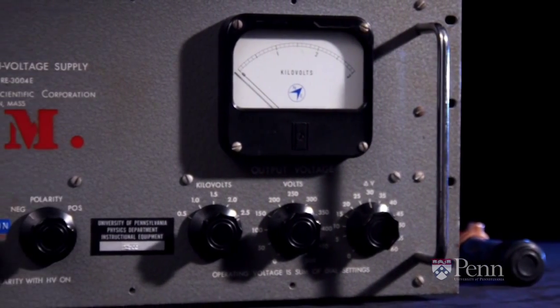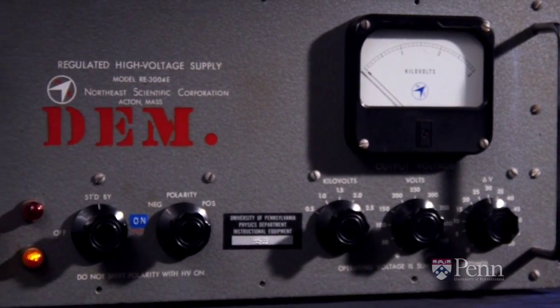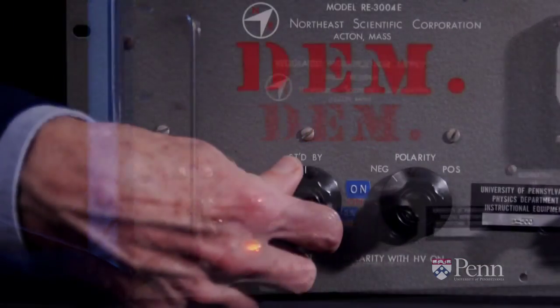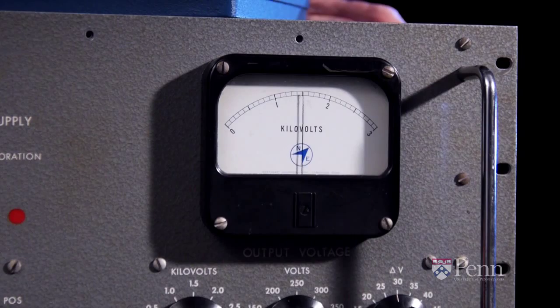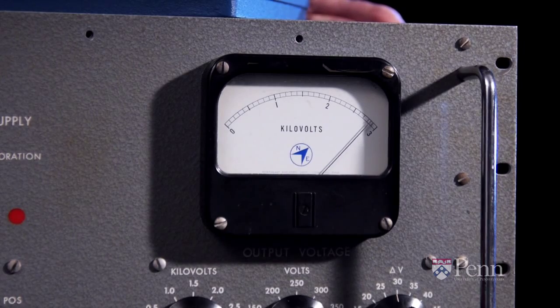The power supply is a very nice old research high voltage supply. We're going to be using 3,000 volts to make these electrons move through our cathode ray tube.